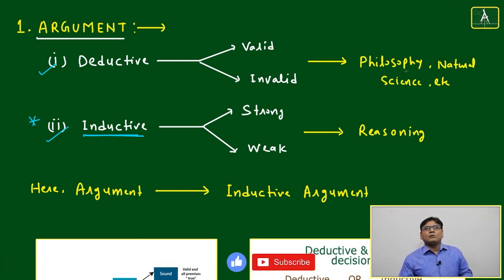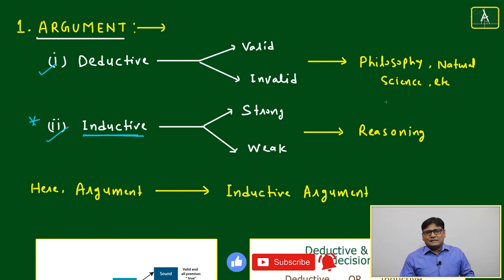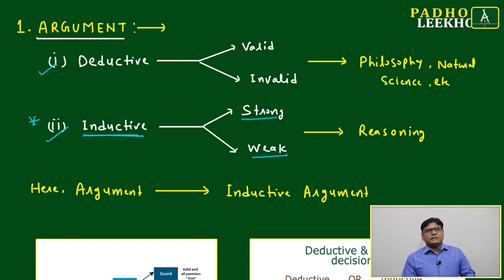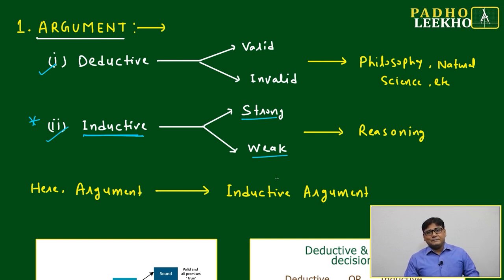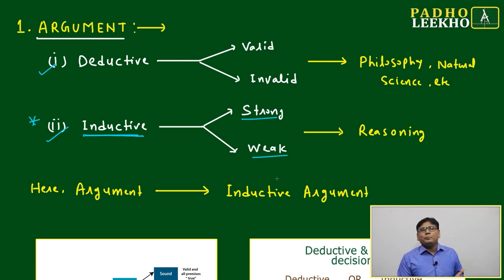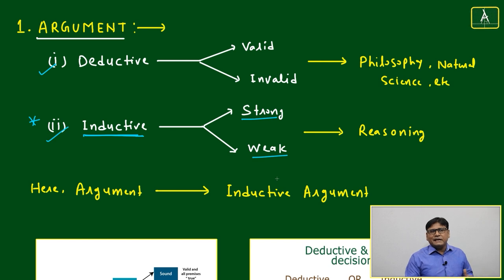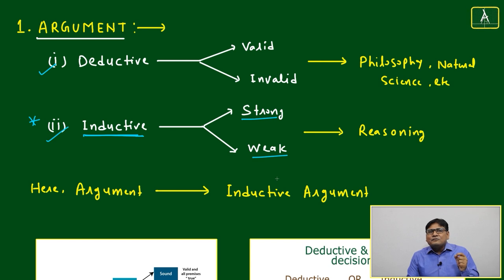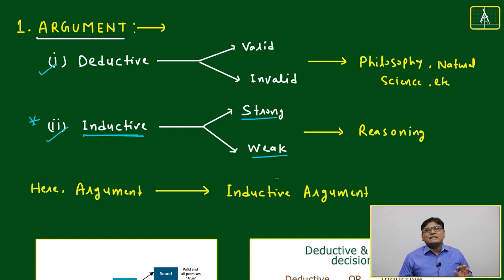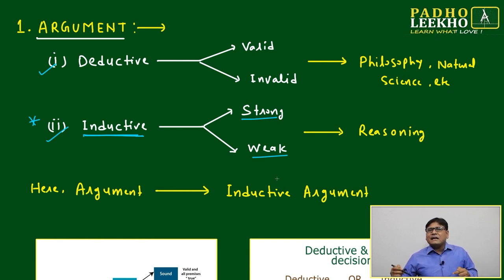Deductive argument leads toward philosophy, natural science, and sometimes occult science — we are not going to deal with that here. For reasoning purposes, inductive argument can be strong or weak. In between strong and weak, degrees of measurement also exist. You cannot say everything is defined like a north pole and south pole — between north pole and south pole there is life too. Similarly, between a strong and weak argument, degrees of strongness and weakness also exist.